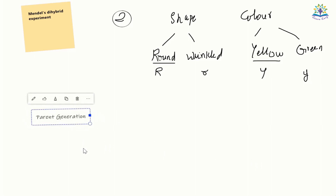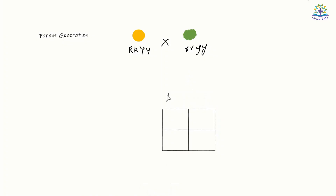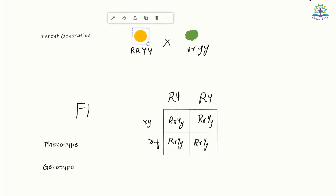In the parent generation, the cross-pollination is done between a plant with round-shaped yellow-colored seeds and a plant with wrinkled-shaped green-colored seeds, represented with the genotype uppercase RRYY and lowercase rryy respectively. Each parent gamete receives one set of alleles as shown here, and the offsprings therefore have four possibilities. It was observed that all the plants in the F1 generation had the phenotype round shape with yellow color, and all plants had the genotype uppercase R, lowercase r, uppercase Y, lowercase y.